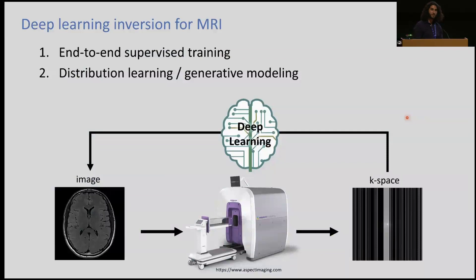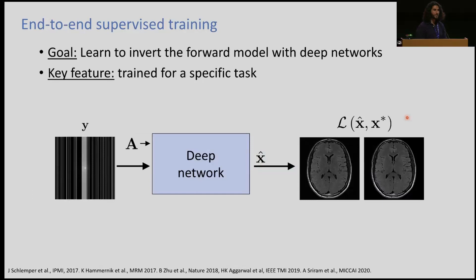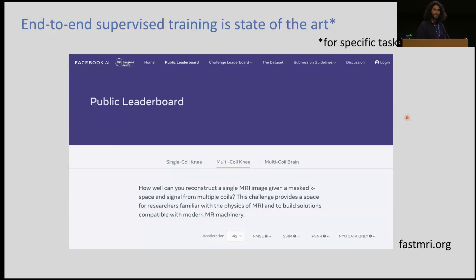But I'm not going to talk about compressed sensing. Right now we're really using deep learning as an inversion tool for this MRI forward model, and there are kind of two flavors: one would be the end-to-end model, whether supervised or not, and another would be a generative model. End-to-end supervised training is really powerful because it learns to invert the forward model with deep networks, but the key feature — which could also be a bug — is that it's trained for a specific task. If you're going to use it, it's state-of-the-art for that specific task.